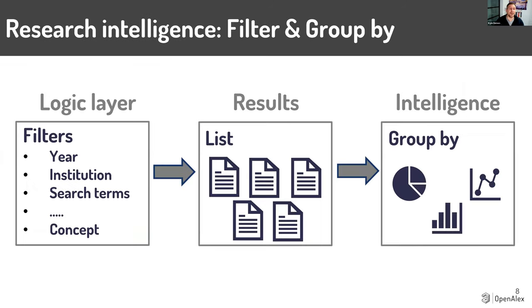Everything we're going to talk about with research intelligence in OpenAlex comes down to a very simple and elegant model. You have all the works in OpenAlex, then you apply filters that are your logic layer — say you search kelp ecology, but you also want to limit to years and countries. You can build a complex query, and that gives you the subset of results you care about — we call that the list. Then if you want intelligence on that subsection, that's where the group by feature comes in. The filter and group by features are very similar in the metadata associated with them — you could use a year as a filter or group by year to see change over time.